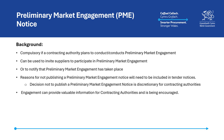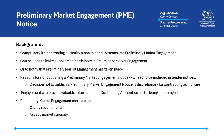Preliminary Market Engagement is to be encouraged, as this can be invaluable to the contracting authority in the right circumstances for a number of reasons. For example, feedback from suppliers at this point in the procurement process can help contracting authorities to clarify their requirements based on feedback from suppliers, making it more likely that bids received will better meet the authority's needs.